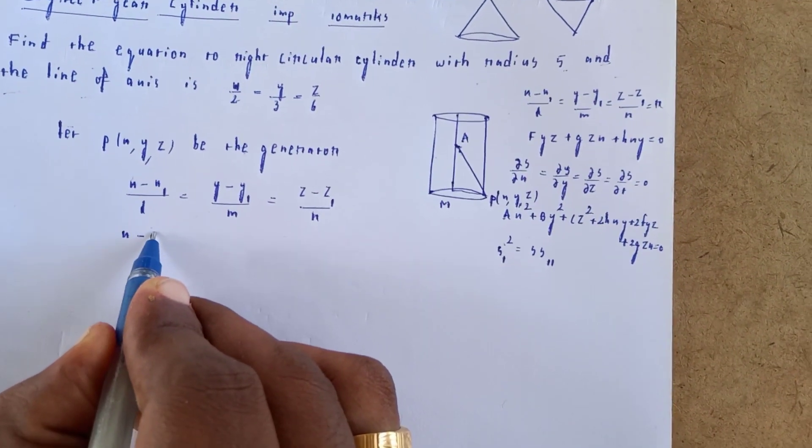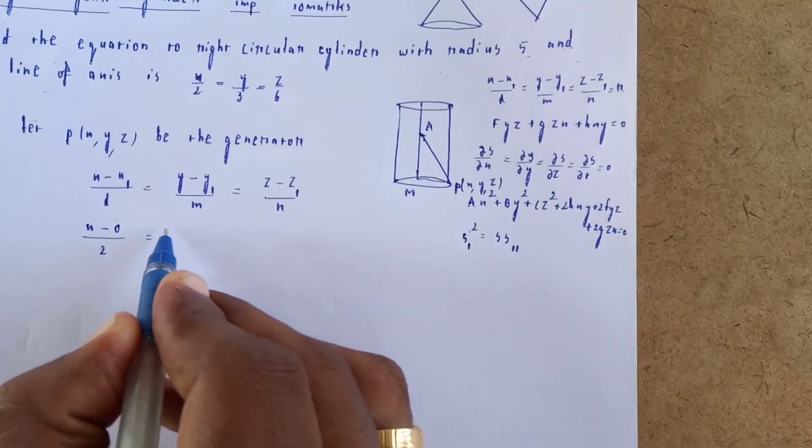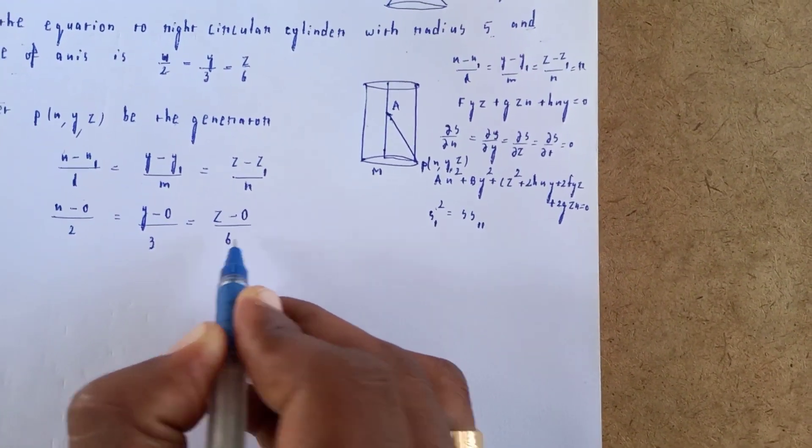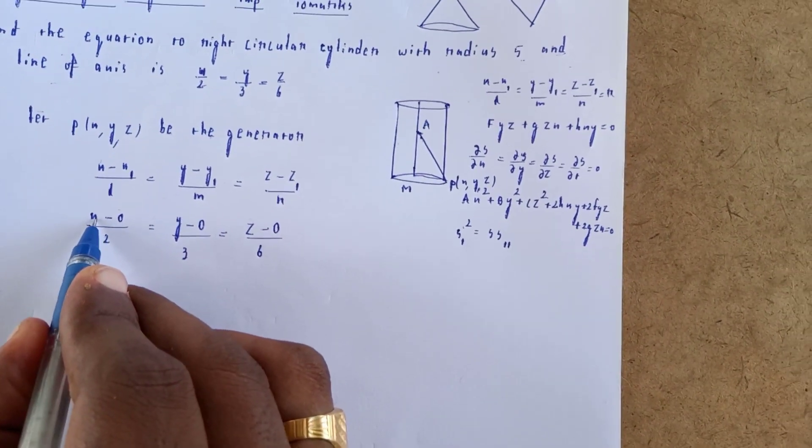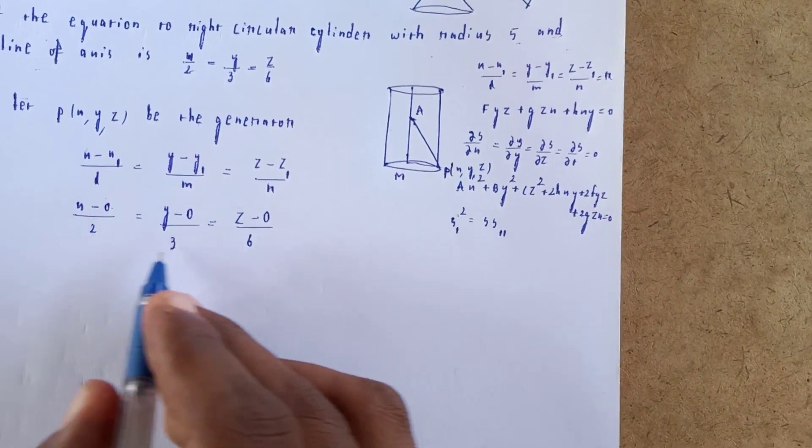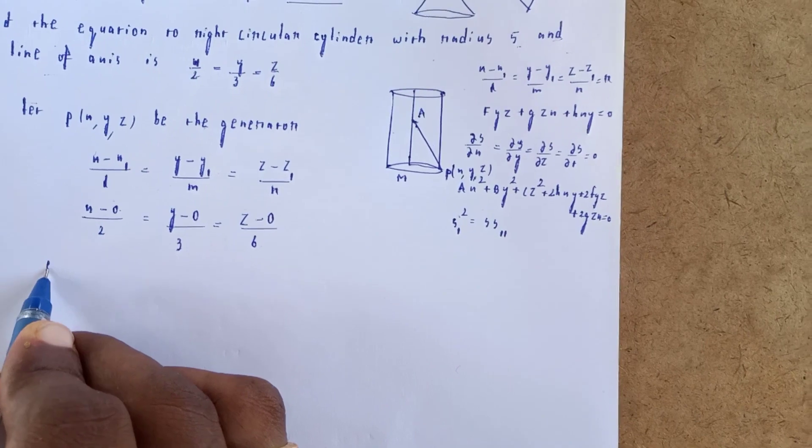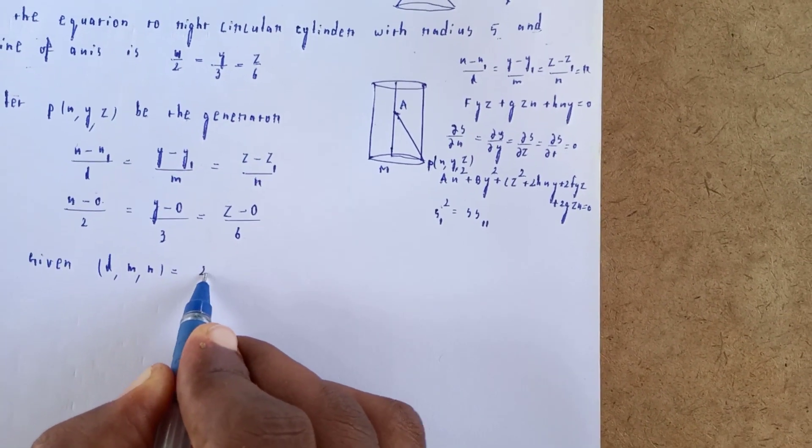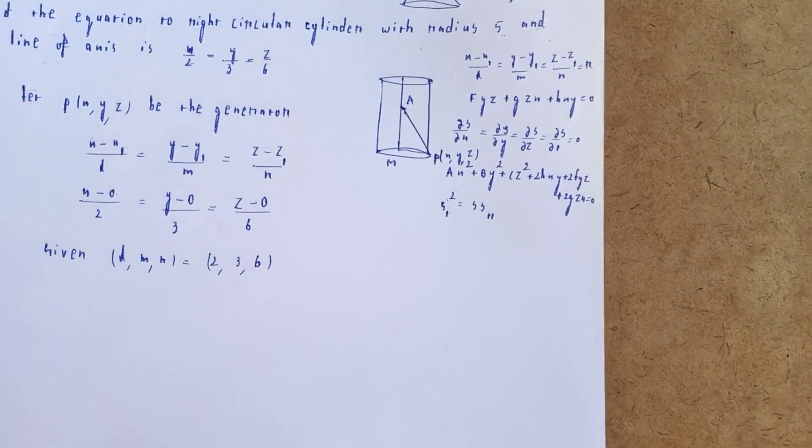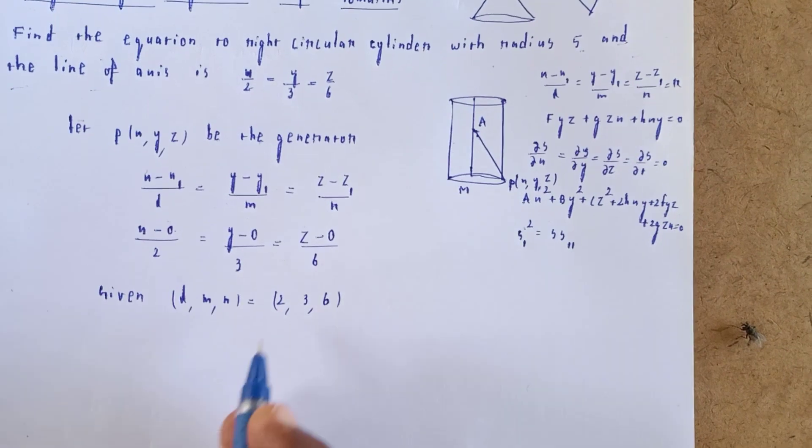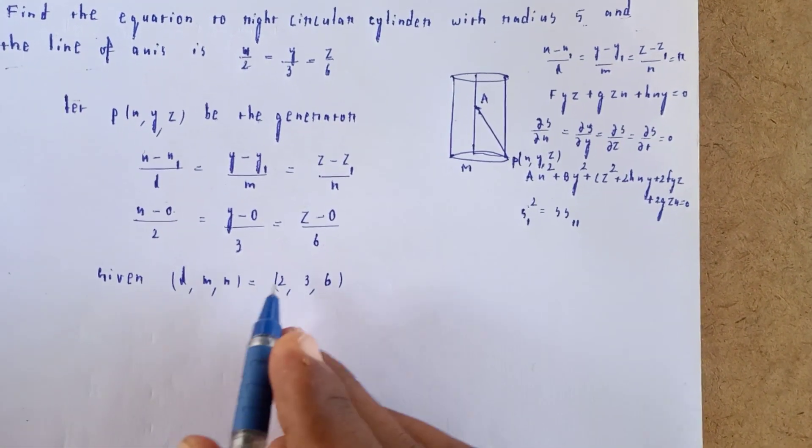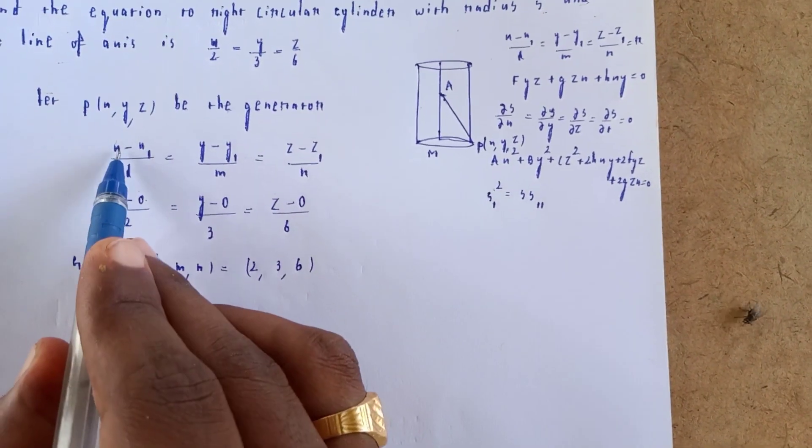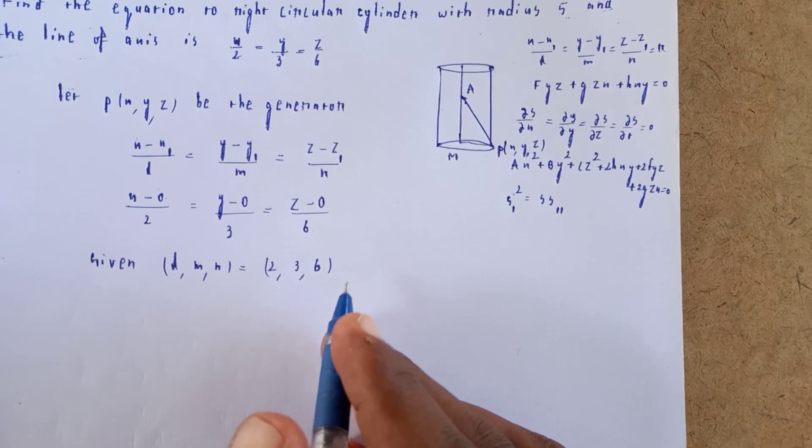(x - 0)/2 = (y - 0)/3 = (z - 0)/6. The elements are given as 2, 3, 6. So we have point (0, 0, 0) and direction ratios (2, 3, 6).